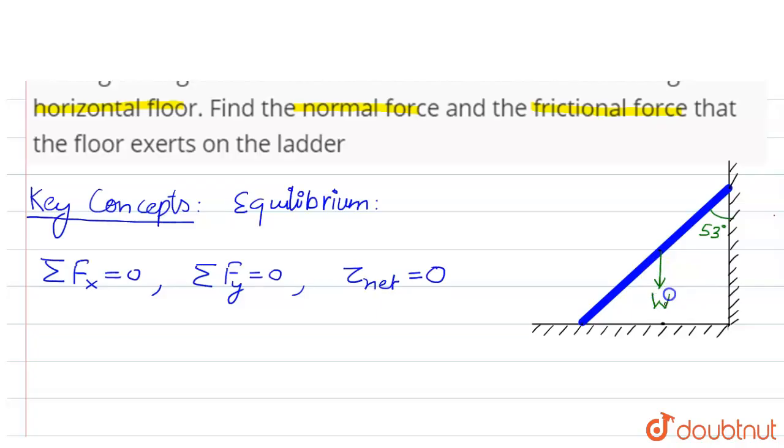As the ladder is in contact at the two surfaces, normal forces will act on them. This is N1 and at this point this is N2. Also, as the surface is rough here,